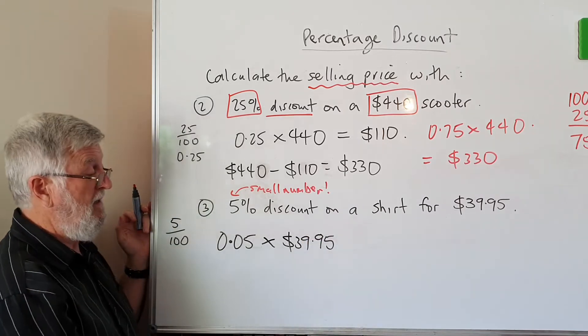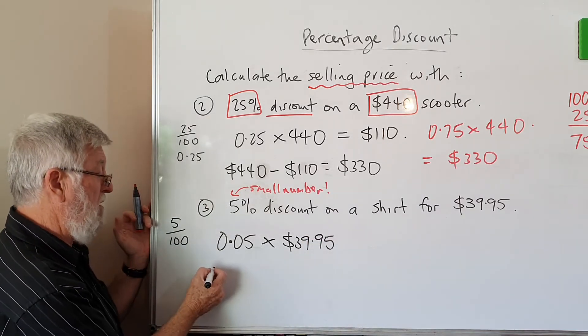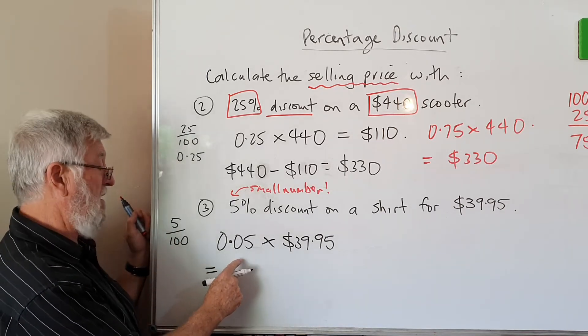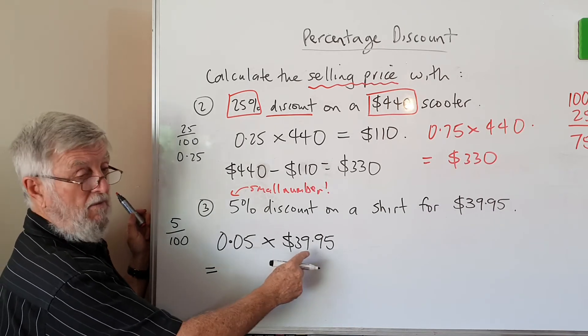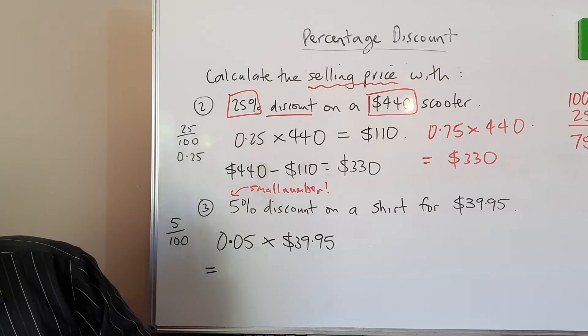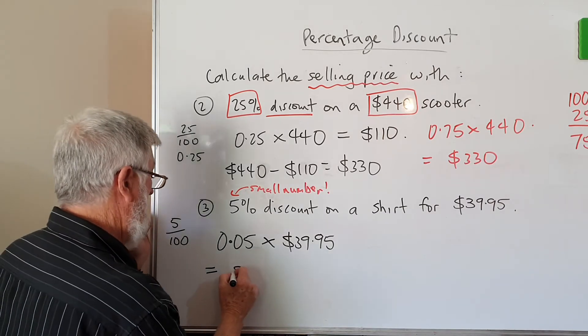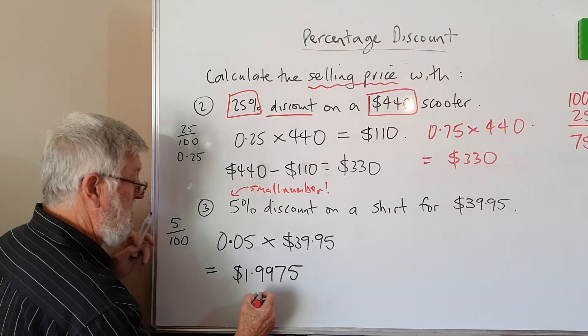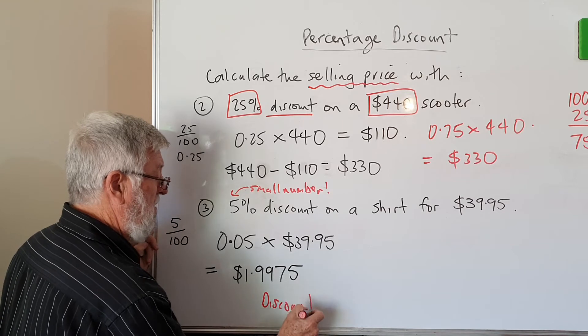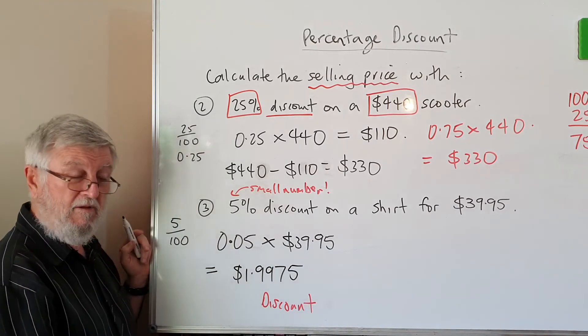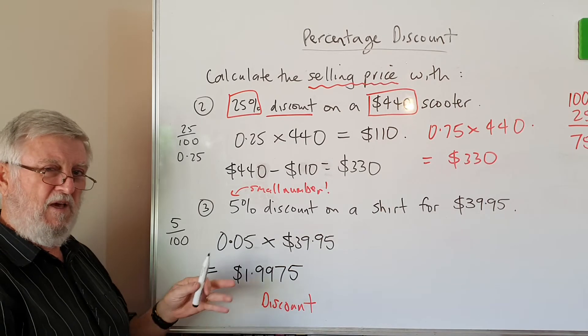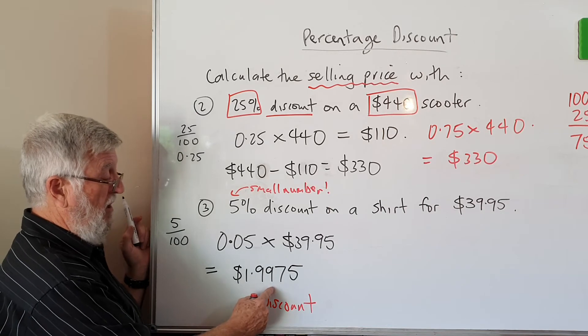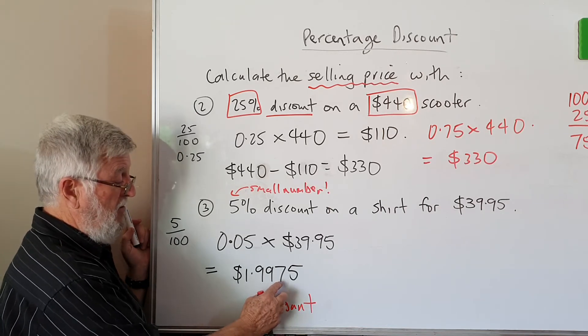So 5 hundredths, and if you think back to decimals, there's the tenths, the first decimal place is the tenth, and the second decimal place is the hundredths. So that's 5 out of 100, which we know is 0.05. And we're going to multiply it by 39.95. Now here's where it becomes quite yucky. The numbers become terrible. I'm going to write down what that answer is. I've got it calculated here. So type in your calculator 0.05 multiplied by 39.95, and it gives you this weird answer.